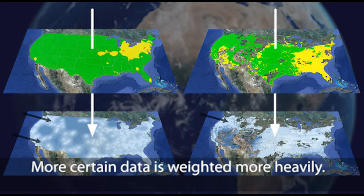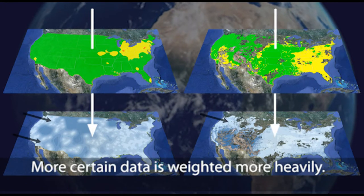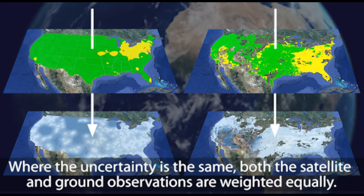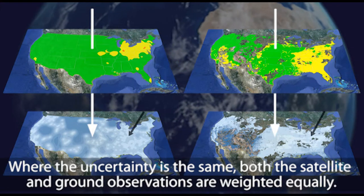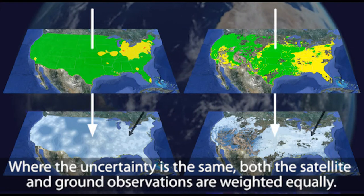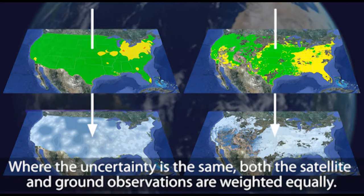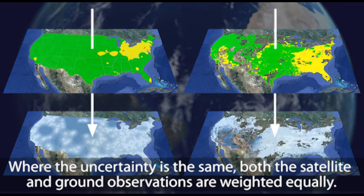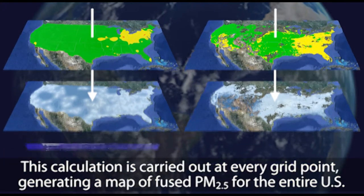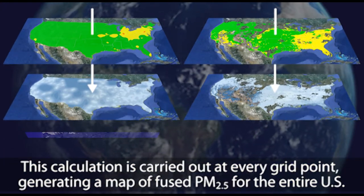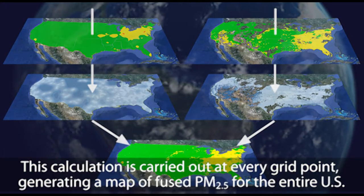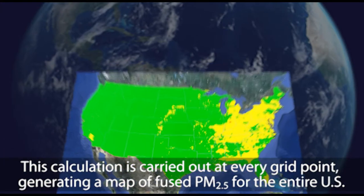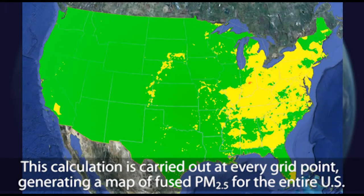More certain data is weighted more heavily. Where the uncertainty is the same, both the satellite and ground observations are weighted equally. This calculation is carried out at every grid point, generating a map of fused PM 2.5 for the entire U.S.